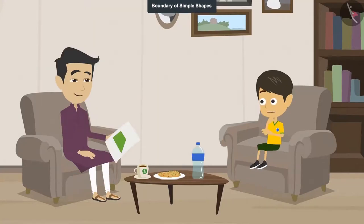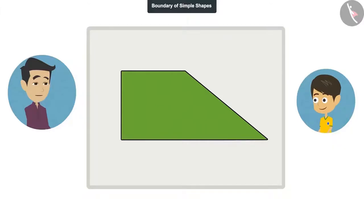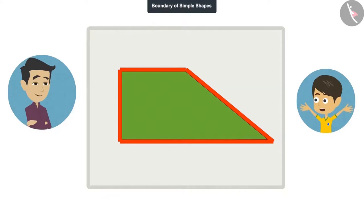Yes, now I understand. The edge of a shape is called its boundary. Yes, and I am finding out the length of the boundary of this field. It is easy. You can add the length of the line on all sides of the boundary and you will get the boundary's length.